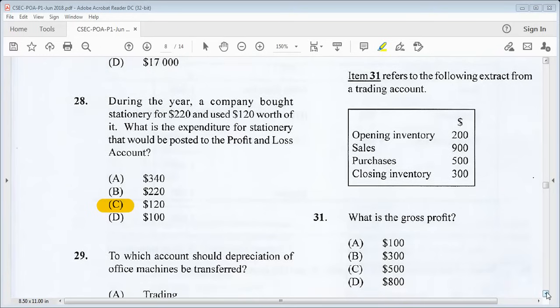Question 31 refers to the following extract from a trading account. We have opening inventory 200, sales 900, purchases 500, closing inventory 300. What is the gross profit? We have our sales 900, then less cost of goods sold. We have our opening stock 200, then we add purchases 500. That's 700. Less closing inventory 300. 700 less 300 from 900, we get our gross profit of $500.